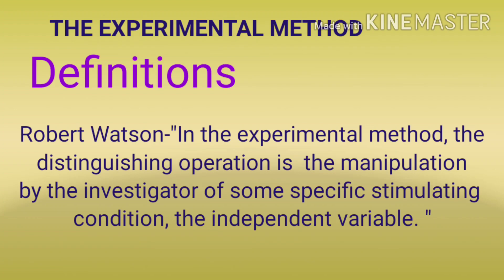We know that behavior can be affected by many variables. If we keep one variable independent and keep the rest of the variables constant, we can see what the effect is on behavior and other variables. That is the essence of the experimental method — the independent variables are kept independent, and the other variables are kept constant.